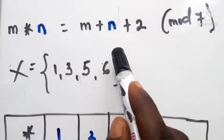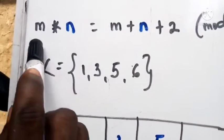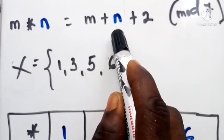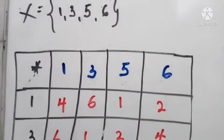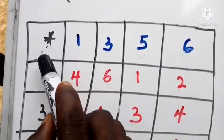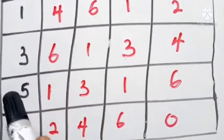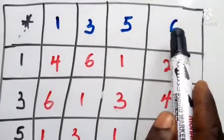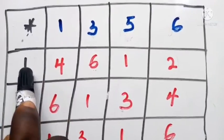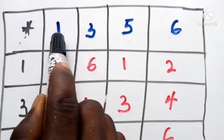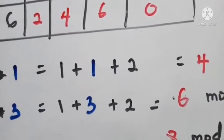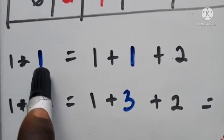These are the people we are dealing with and this is how they are combined — two people, combined as: first person plus second person plus two. Now we draw a table. The first set of members goes along the top: 1, 3, 5, 6, and the same members go down the side. The operation between them gives the result in mod 7.